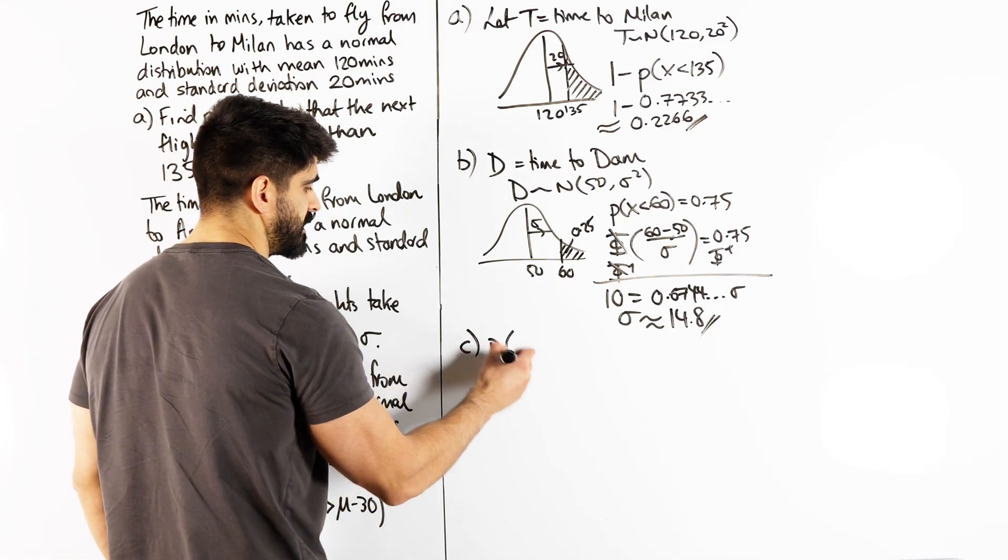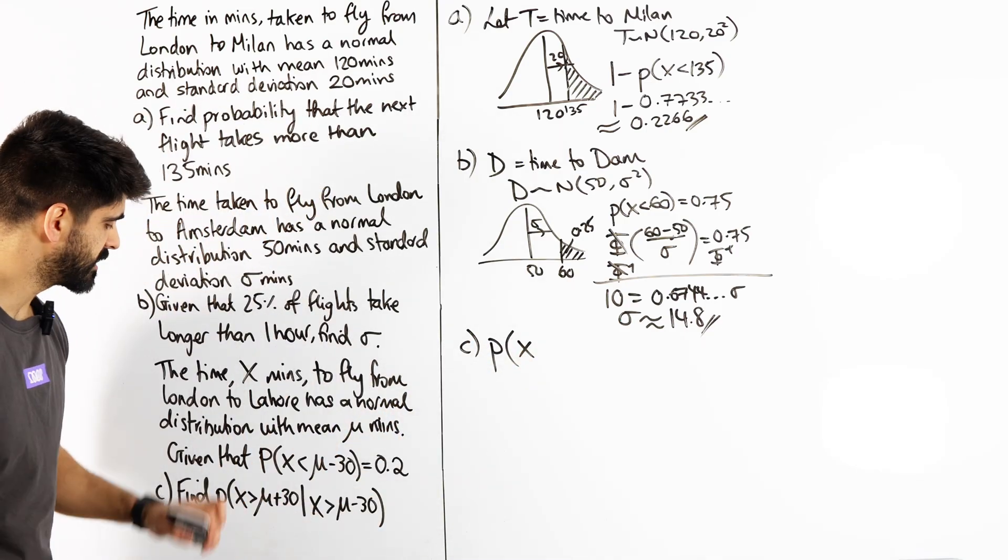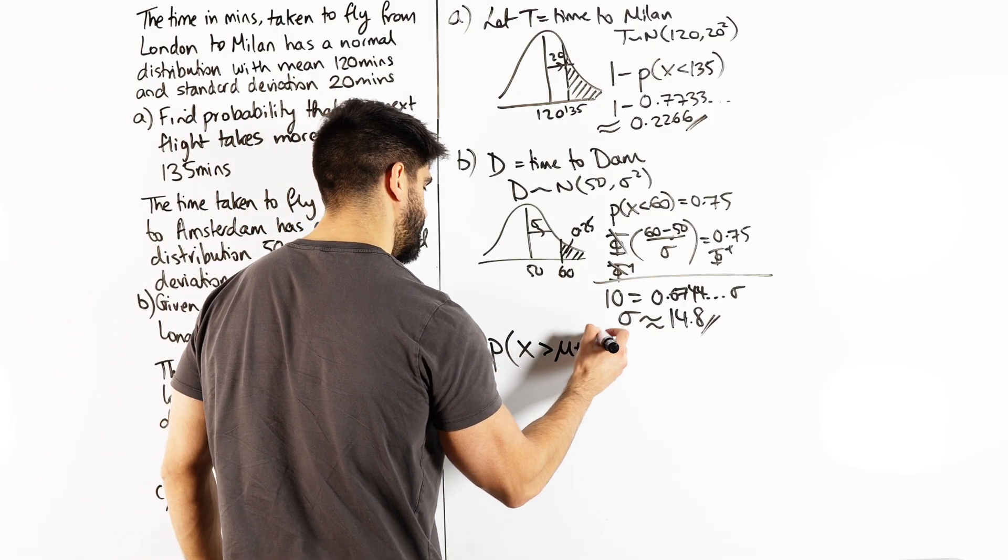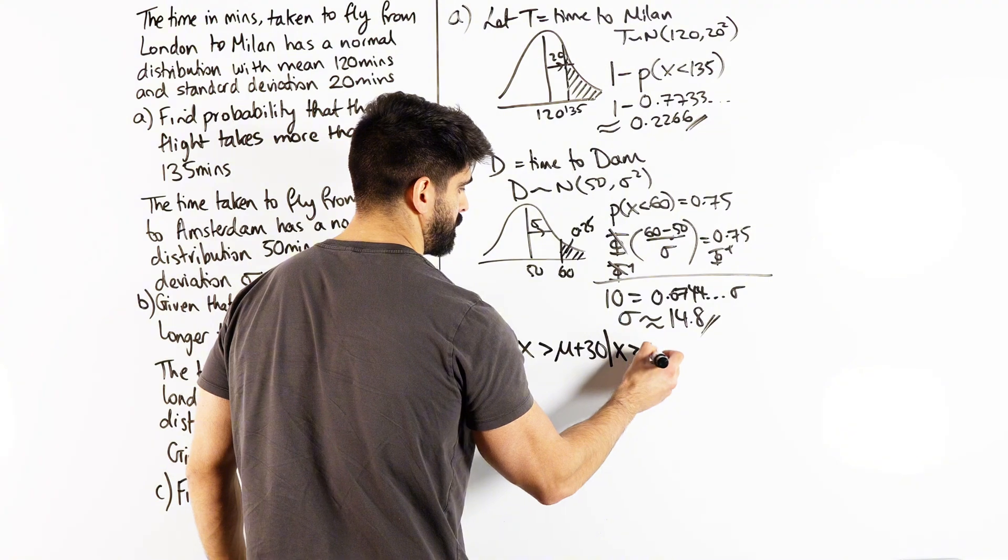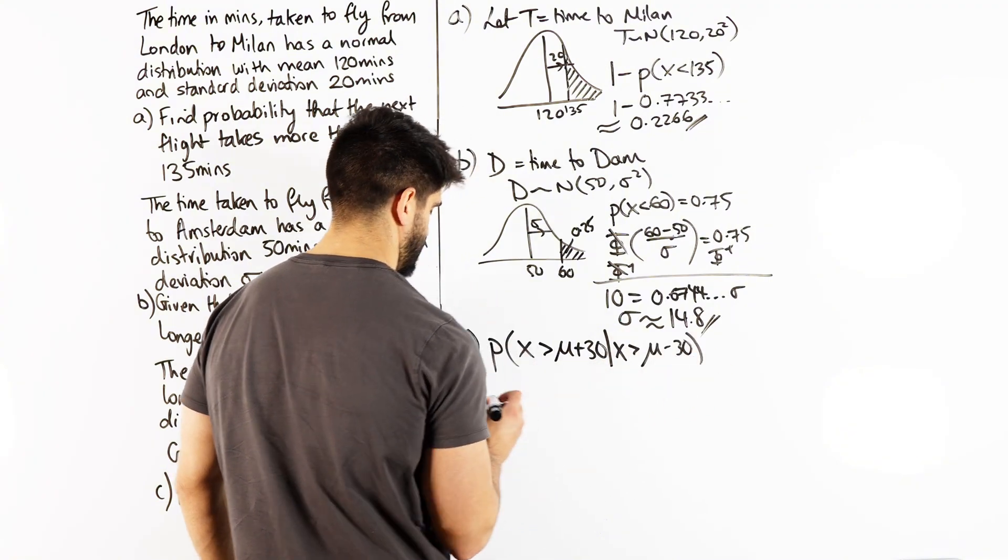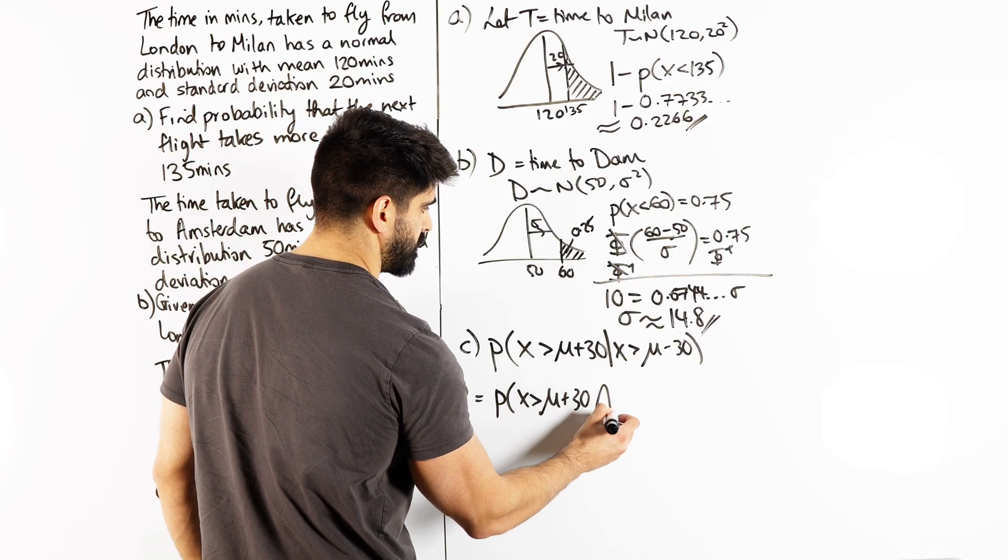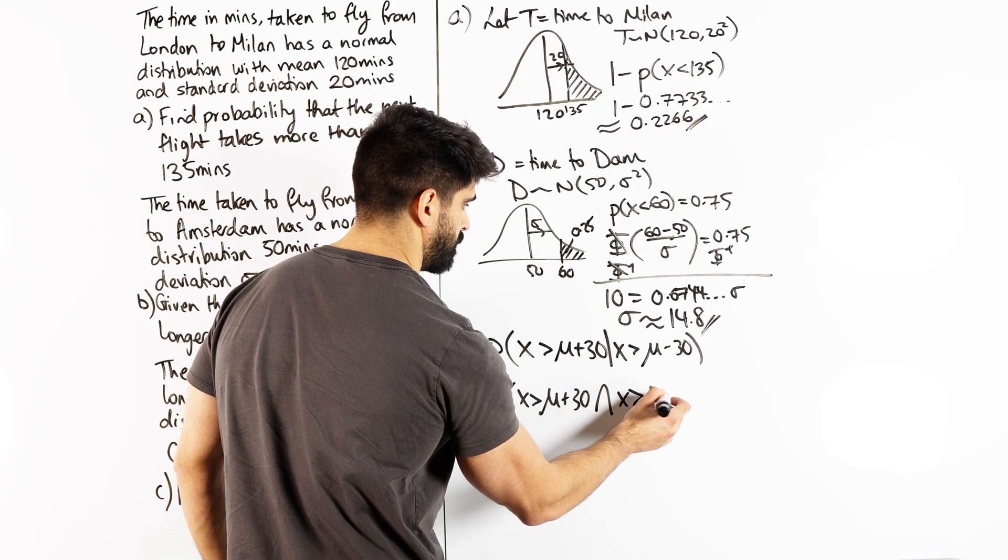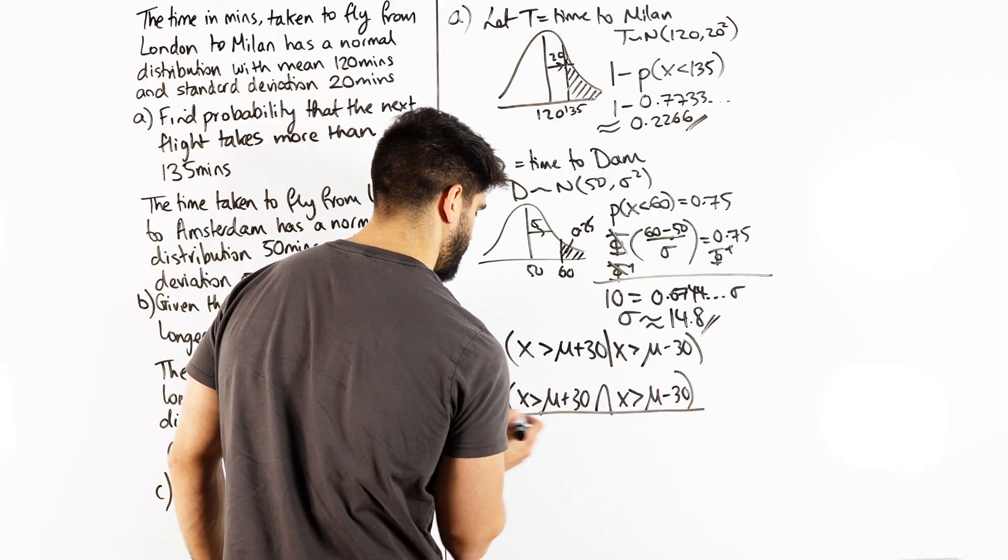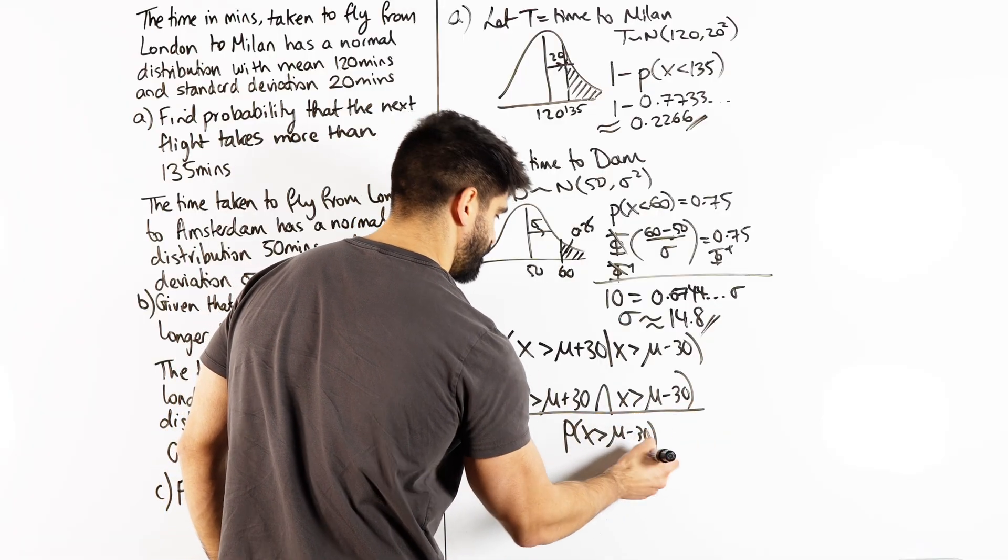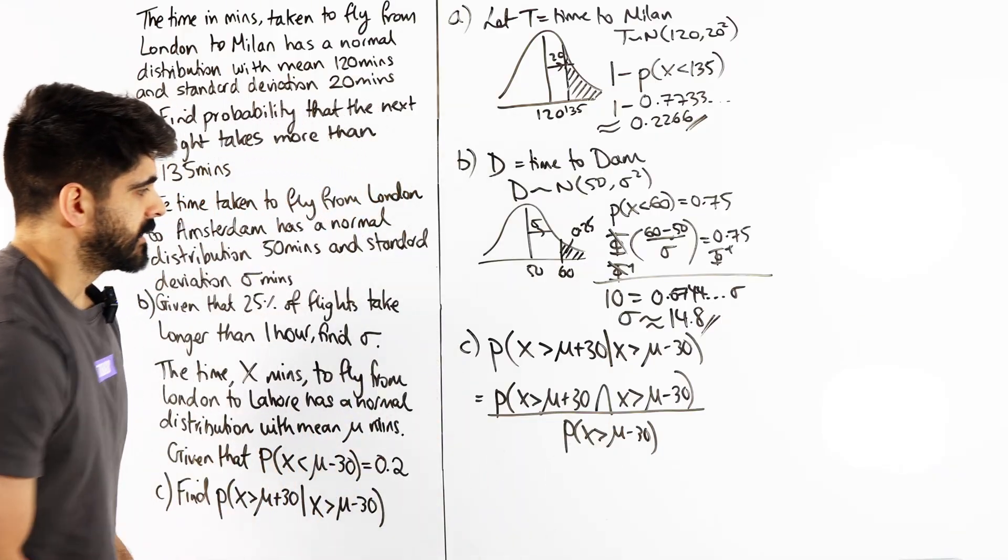So I have the probability that X is greater than mu plus 30, given X is greater than mu minus 30. So that becomes the probability that X is greater than mu plus 30 and X is greater than mu minus 30, all divided by the probability that X is greater than mu minus 30.